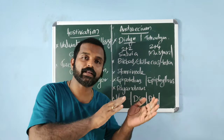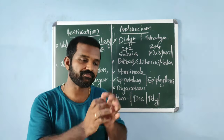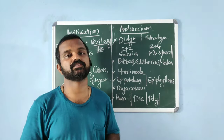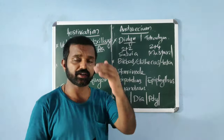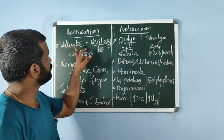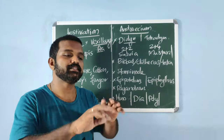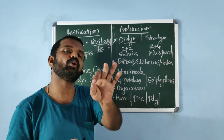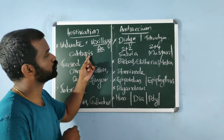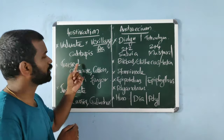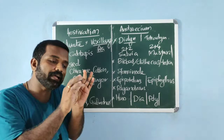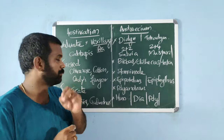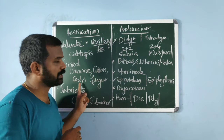Aestivation is the mode of arrangement of sepals or petals in a flower bud with respect to other members of the same whorl. Valvate aestivation: members of sepals or petals are arranged without overlapping — example: Calotropis. Twisted aestivation: complete, regular overlapping — examples: China rose, cotton, lady's finger.